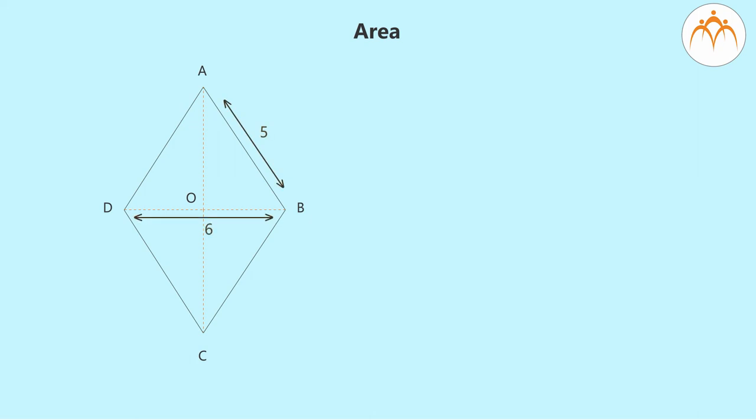The area of the rhombus with side 5 and diagonal 6. We are not given the other diagonal, but we know that the side is the hypotenuse of the right-angled triangle and one of its sides is 6 divided by 2, which is equal to 3. So the other side is 4 using Pythagoras theorem. The diagonals are 6 and 8. So the area is 8 into 6 divided by 2, which is equal to 24 square units.